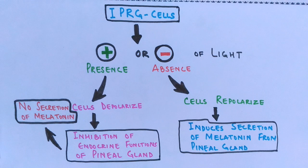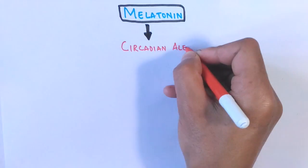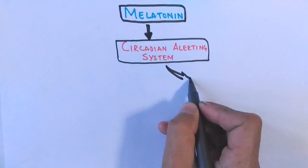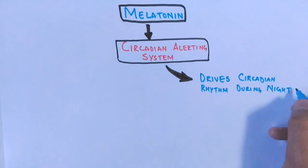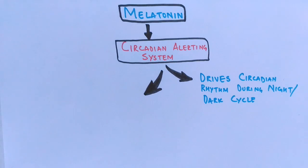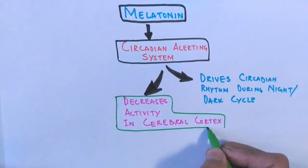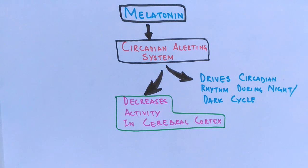Melatonin is processed via circadian rhythms in the suprachiasmatic nucleus (SCN) of the brain, as discussed in the previous video. The melatonin hormone drives the circadian rhythm and activates what we call the circadian alerting system, which continuously drives these rhythms in the SCN. During the dark cycle, when the alerting system is activated, there is a marginal decrease in the activity of the cerebral cortex — the region responsible for thinking, learning, wakefulness, and attention-seeking activities.